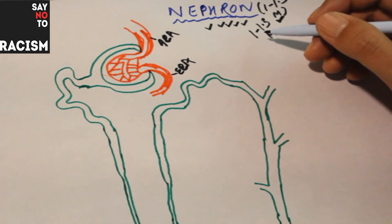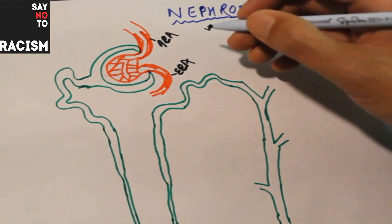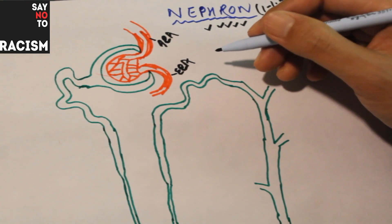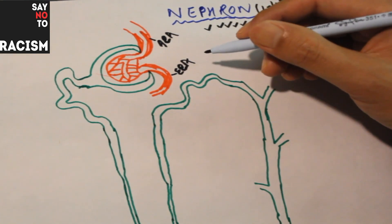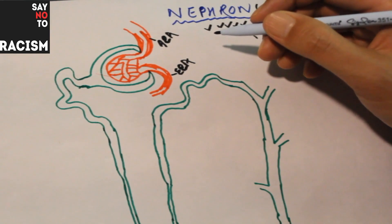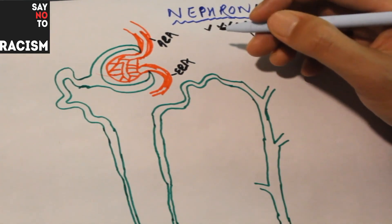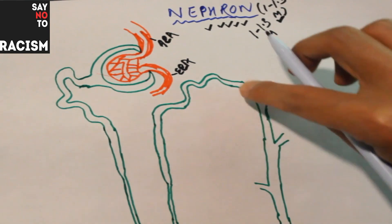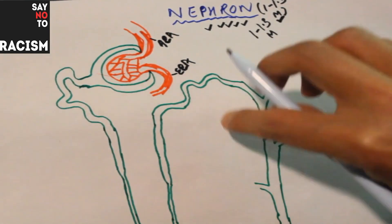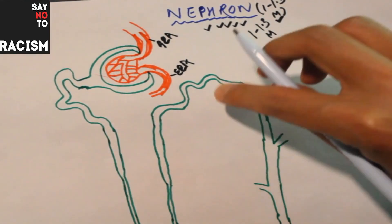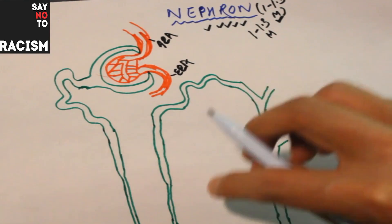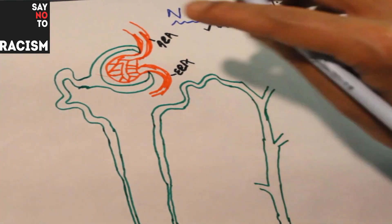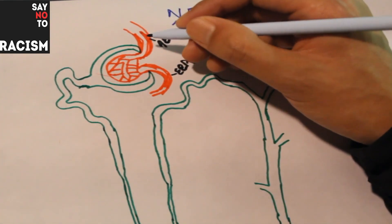Now let us talk about the structure of the nephron. This is very important - they may ask you about the structure of the nephron in entrance examinations and in the plus 2 examination. This is a schematic diagram of the nephron. There are millions of nephrons in the human kidney, so we are going to talk about only one nephron.